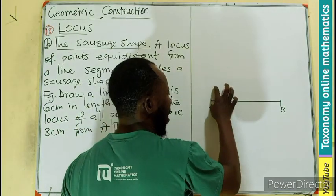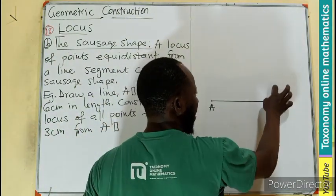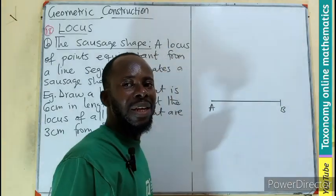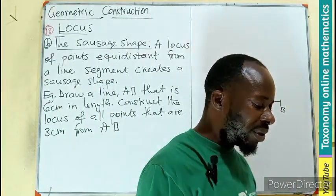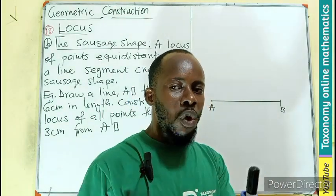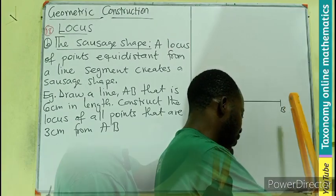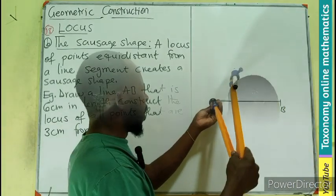You can see we can go above, all dimension three centimeter. We can go this way, all of three centimeter. So let's measure the three centimeter using our compass on the ruler so that we can put it at any place we want to put it.